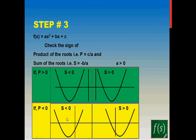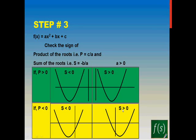So if sum < 0 and product < 0, one root lies on the left and the other on the right, and the minima or maxima will be on the negative x-axis. If sum > 0 and product < 0, one root is still positive and the other negative, but your maxima or minima will lie on the right-hand side.